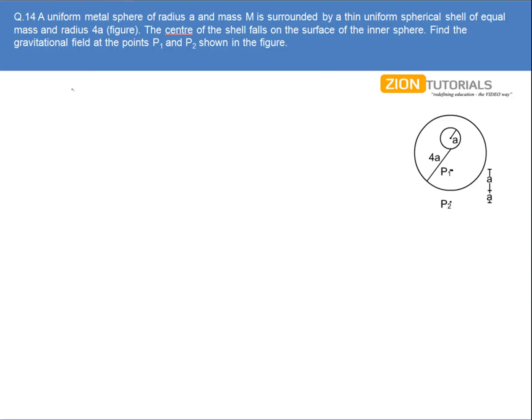If I talk about P1, then the gravitational field at P1 will be only due to the metallic sphere and not due to the hollow sphere, because point P1 is lying inside the hollow sphere.